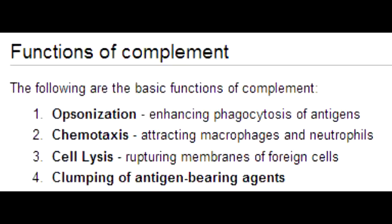C5A is a major chemoattractor from the complement system, signaling for neutrophil chemotaxis. What is the function of C5B, C6, C7, C8, and C9? All these proteins make up the membrane attack complex and collectively lead to cytolysis of the bacterial cell membrane.